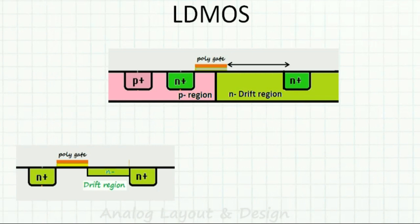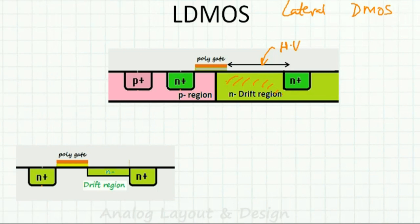LDMOS stands for lateral DMOS. Here we see the drift region is larger — it starts from the middle of the poly gate itself. This is similar to drain-extended MOS, with the drain at a distance for high voltage application, but the N-minus drift region in LDMOS is bigger. That is the key difference between LDMOS and drain-extended MOS.